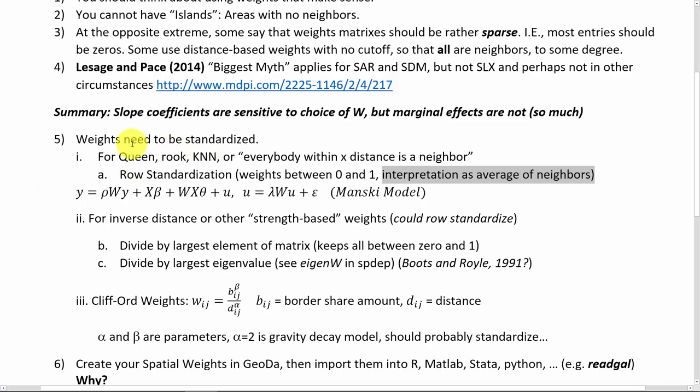Row standardized k nearest neighbors or queen or rook would be to say my value for y, say crime rates, is some function of rho times wy. Here wy would just be the average crime rate of my neighbors, however we're defining neighbors, plus x beta - slope coefficients times my own explanatory variables. wx theta - wx here would just mean the average value of the explanatory values for my neighbors. So that could be income, what's the average income of my five neighbors or six neighbors or ten neighbors. Or if we have a spatially lagged error term here, then lambda wu - wu is what's the average value of the residual term for my neighbors.